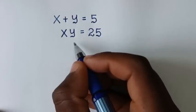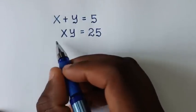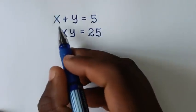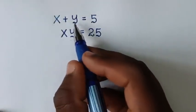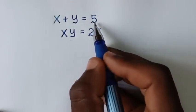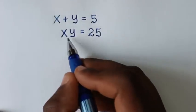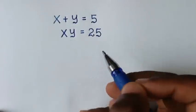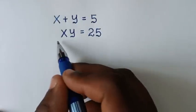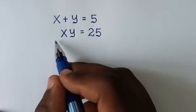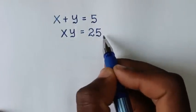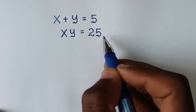Hello, you are welcome to solve this math problem of x plus y is equal to 5, xy is equal to 25, to find the values of x and y from these two systems of equations.